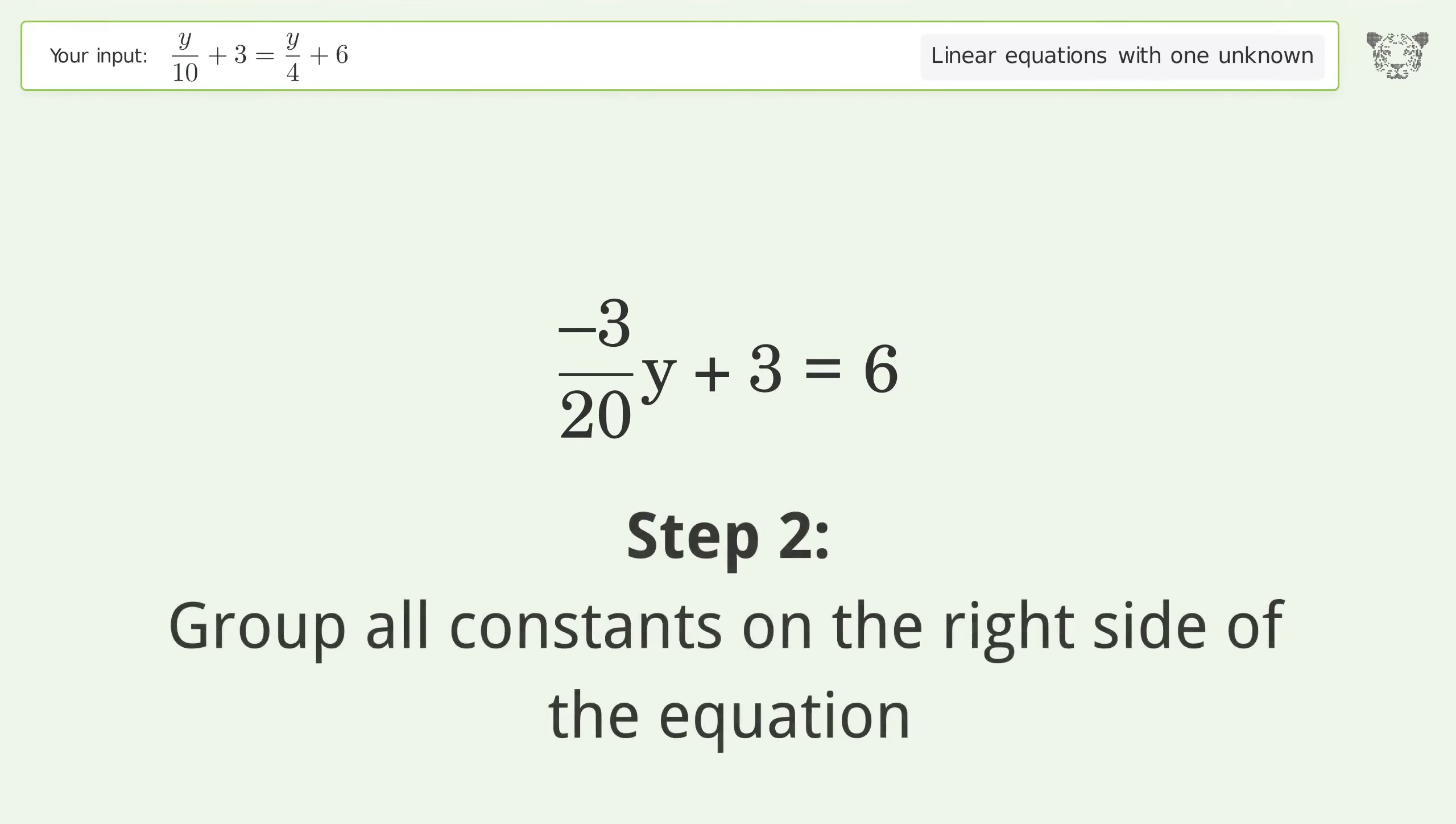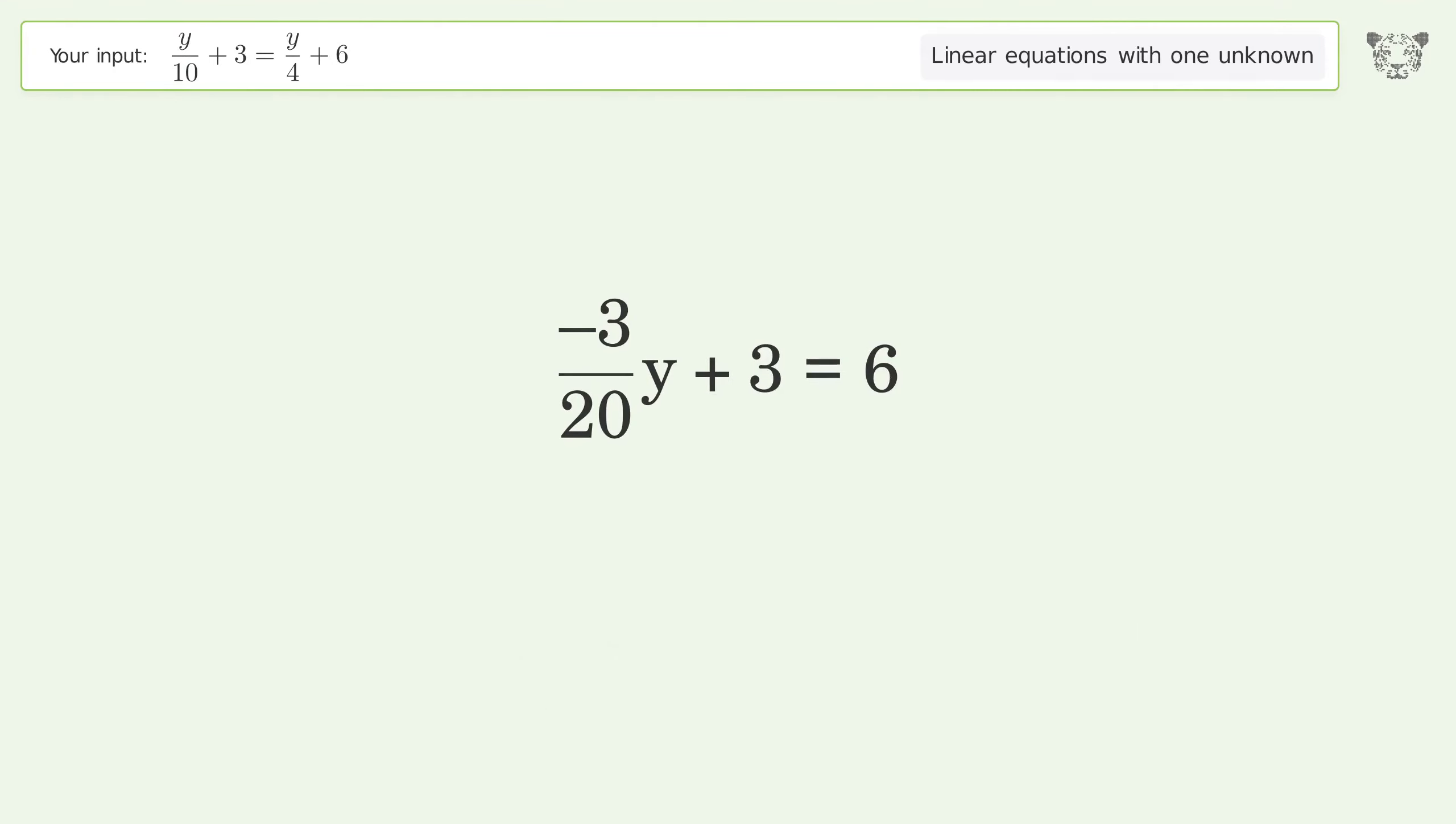Group all constants on the right side of the equation. Subtract 3 from both sides. Simplify the arithmetic.